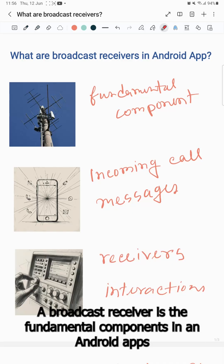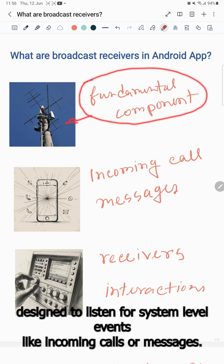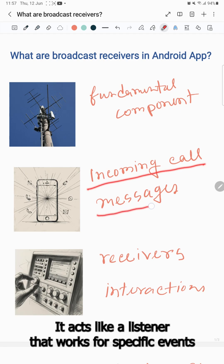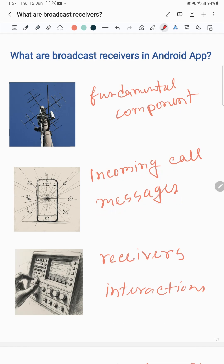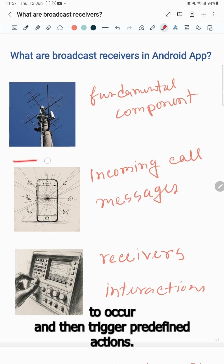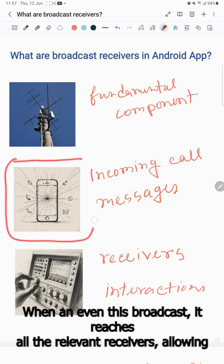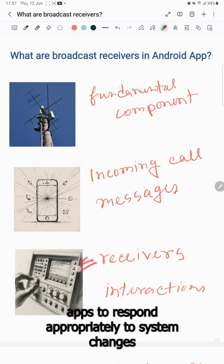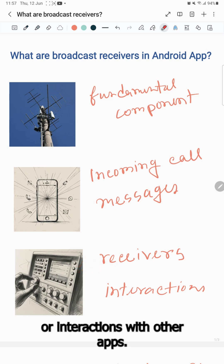A broadcast receiver is a fundamental component in an Android app designed to listen for system-level events like incoming calls or messages. It acts like a listener that waits for specific events to occur and triggers predefined actions. When an event is broadcast, it reaches all relevant receivers, allowing apps to respond appropriately to system changes or interactions with other apps.